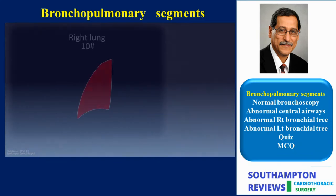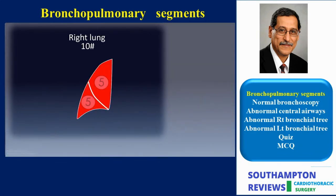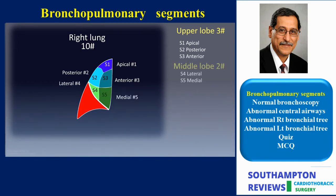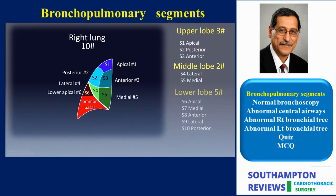The oblique fissure equally divides the segments into 5 above and 5 below it. The three segments of the upper lobe are named apical (RS1), posterior (RS2), and anterior (RS3). The two segments of the middle lobe are named lateral (RS4) and medial (RS5). The lower lobe follows a general arrangement of apical and common basal. The apical is also known as the superior segment, and the common basal comprises four segments: medial basal (RS7), anterior basal (RS8), lateral basal (RS9), and posterior basal (RS10).